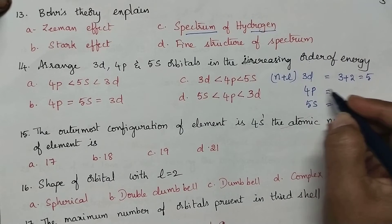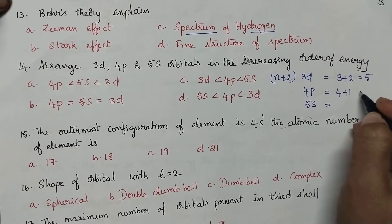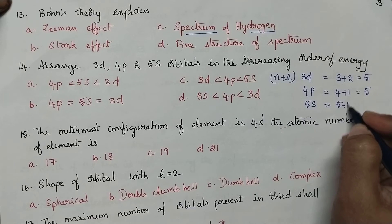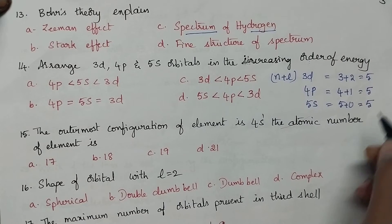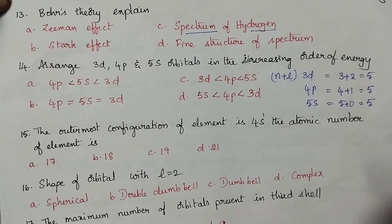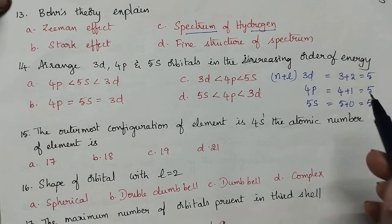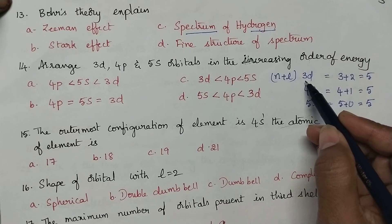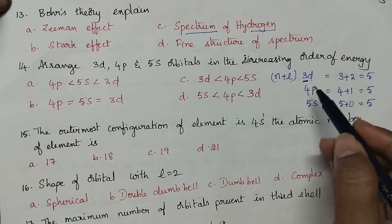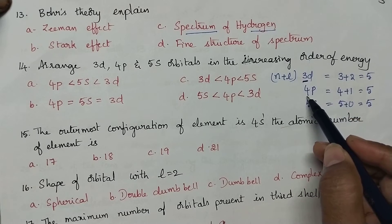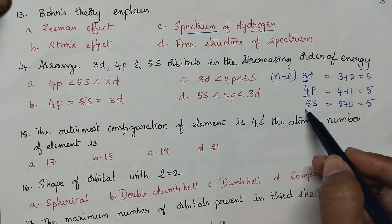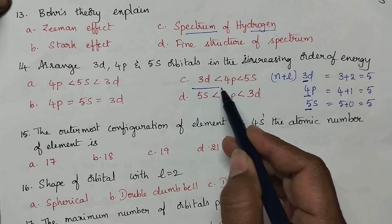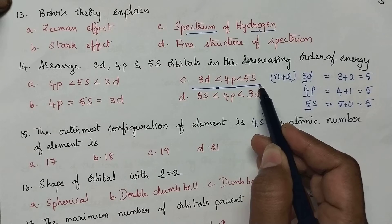For 4p orbital, it is 4 plus 1, equal to 5. For 5s orbital, it is 5 plus 0, hence n plus l value is equal to 5. All three orbitals have the same n plus l value. Then the orbital with the lowest n value will have the least energy. So 3d orbital has least energy, followed by 4p, then 5s orbital.